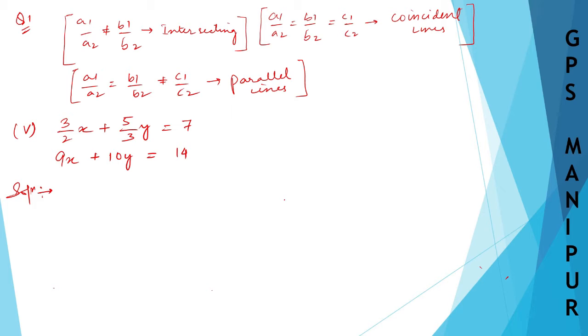Now let me take the first equation. A1 is equal to 3/2, I am taking all this. B1 is equal to 5/3, and C1 is equal to...